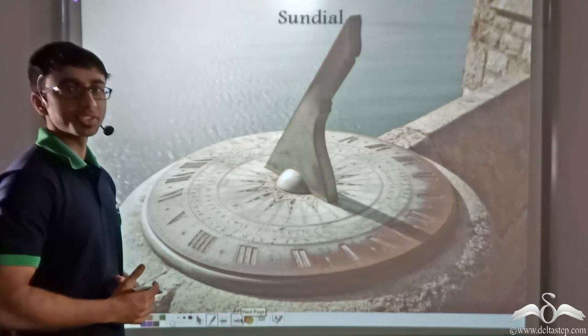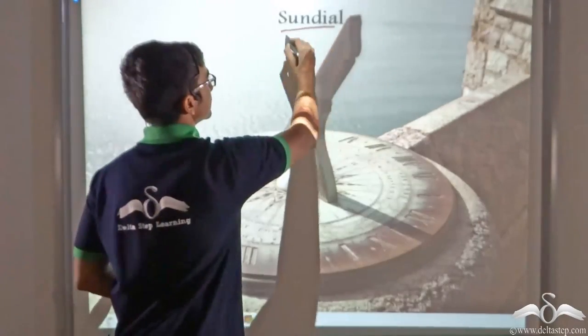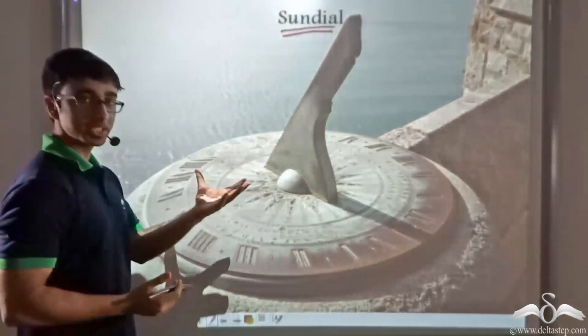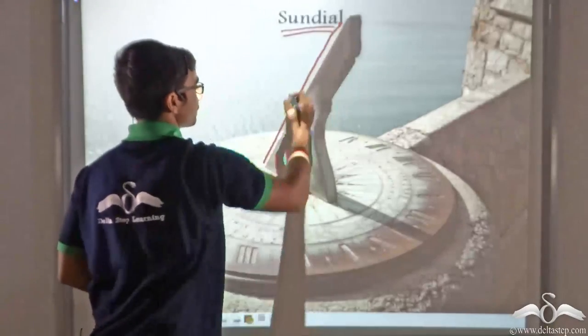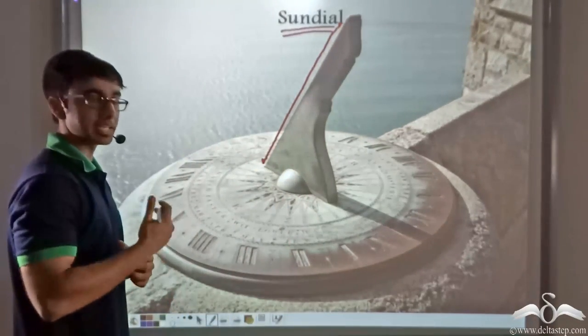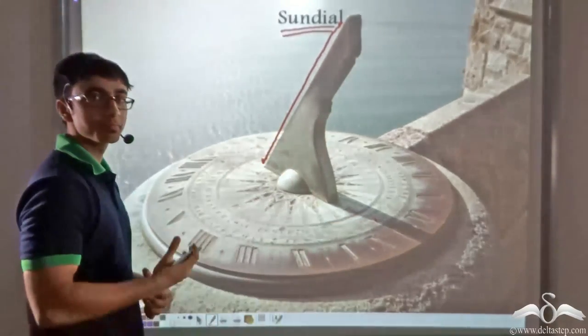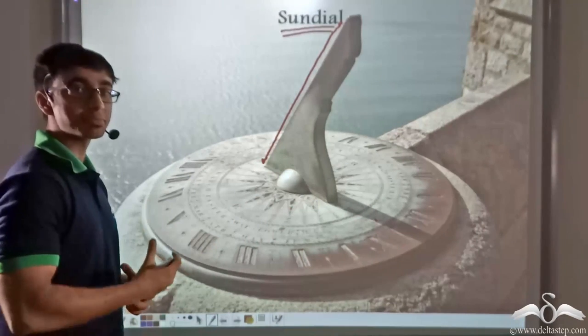One of the earliest examples of an instrument to measure time is that of a sundial. Now a sundial, as you can see, consists of a raised structure. Based on the movement of the Sun in the duration of a day and the position of the shadow of the structure, people used to say what time of the day it is.